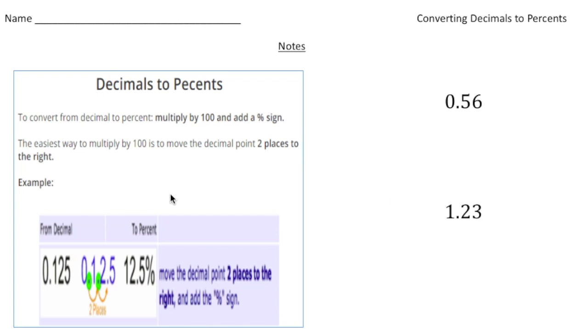To convert a decimal into an equivalent percentage, it's pretty easy. Basically, to convert from a decimal to a percent, multiply it by 100 and then add a percent sign.